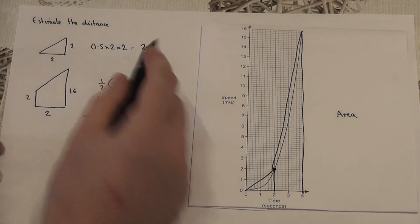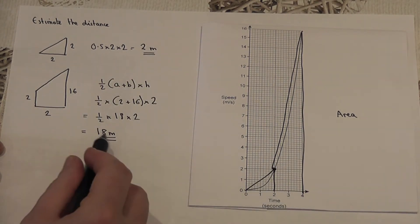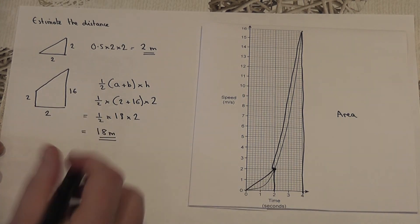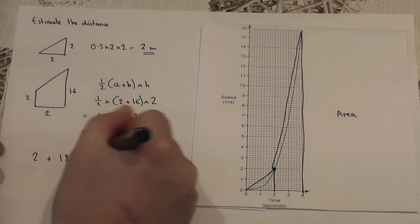So approximately 2 metres in the first two seconds and then a further 18 metres in the next two seconds, the total distance is approximately 2 plus 18, which equals 20 metres.